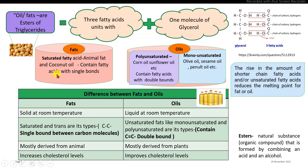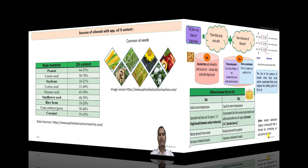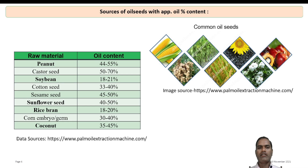During oil processing technology, oil contained in oil seeds is removed or extracted by mechanical pressing or the solvent extraction process. The percentage of oil content in oil seeds varies: peanuts contain 44 to 55% oil, soybean contains 18 to 21%, sunflower seeds contain 40 to 50%, rice bran contains 18 to 20%, and coconut contains 35 to 45%.